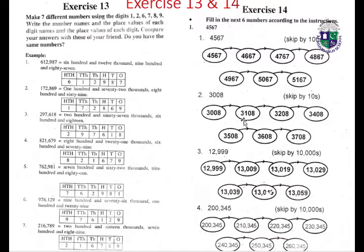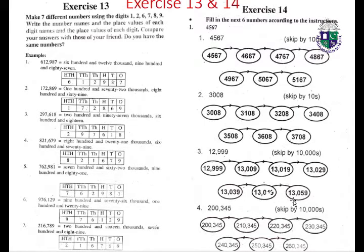3,308; 3,408; 3,508; 3,608; 3,618; 3,628; 3,638. Question number three: 12,999 — skip by 10: 13,000; 13,010; 13,019; 13,029; 13,039; 13,049; 13,059.